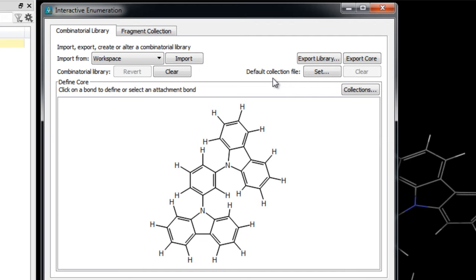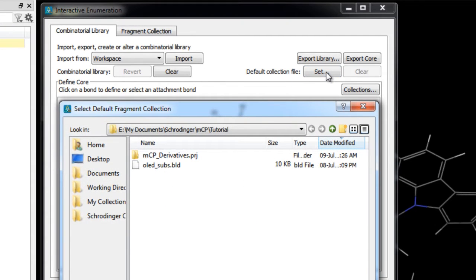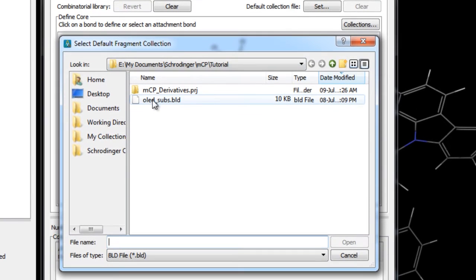To set the pre-built collection file we'll click set from the default collection file option and then choose the OLEDsubs.bld file.